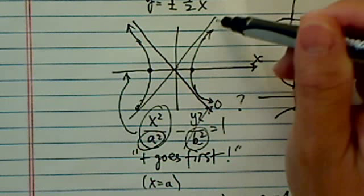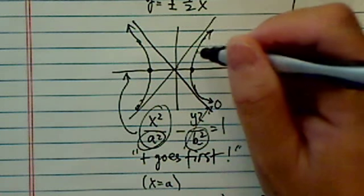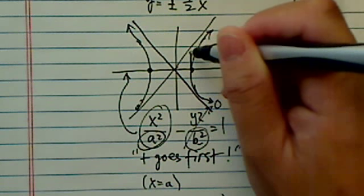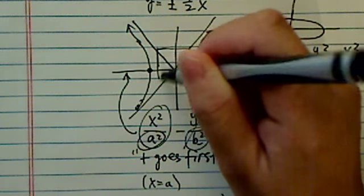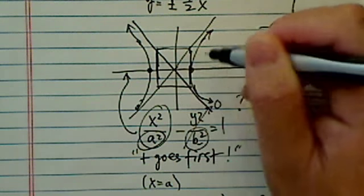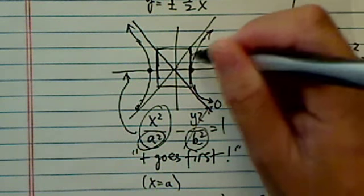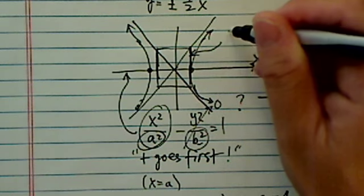So curve is over here and asymptotes approaches to the curve approaches to the asymptotes. Now if you notice that there's a box over here. The box gives us the slope. If you look at this one,